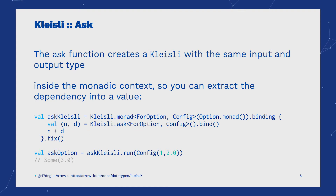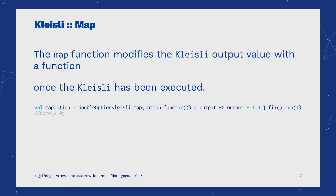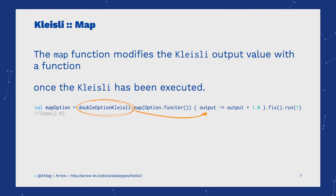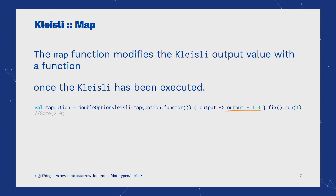The map function modifies the Kleisli output value once the Kleisli has been executed, then returns a new Kleisli with the new output type to continue with more transformations.